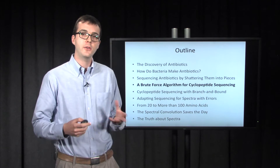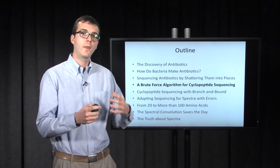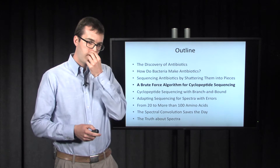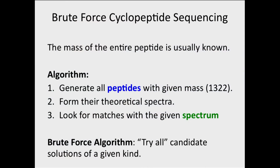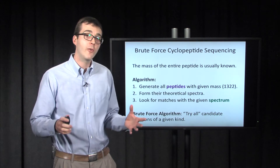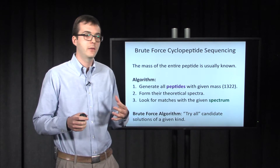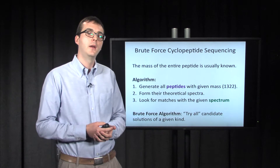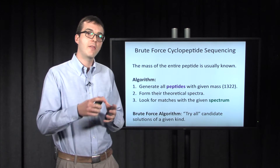We have a well-defined computational problem that models what the mass spectrometer is telling us. The mass of the entire peptide is usually known — for example, tyrosinine B1 has mass 1322. Our algorithm will generate every possible peptide of that mass, form the spectrum of every one of those peptides, and then look for matches with the given spectrum among those peptides.